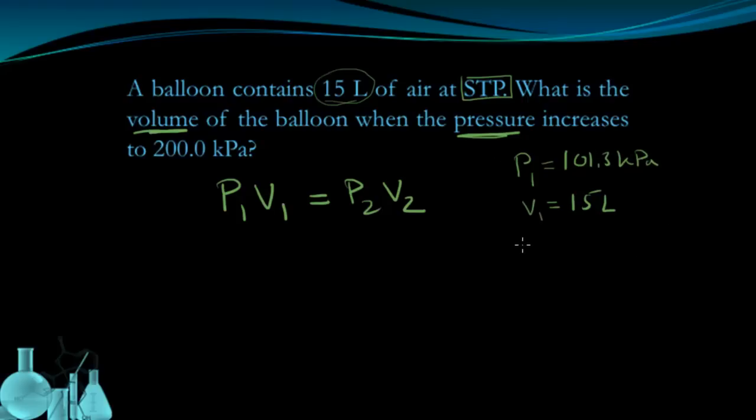So now we have some of our variables set up. We now need to look at what the final pressure and final volume are. Well, I'm told that the pressure is going to increase to 200 kilopascals. So that's going to be the second or final pressure, P2. V2 is going to be my unknown because the question is asking me, what is the volume of the balloon? So V2 is going to remain a variable.